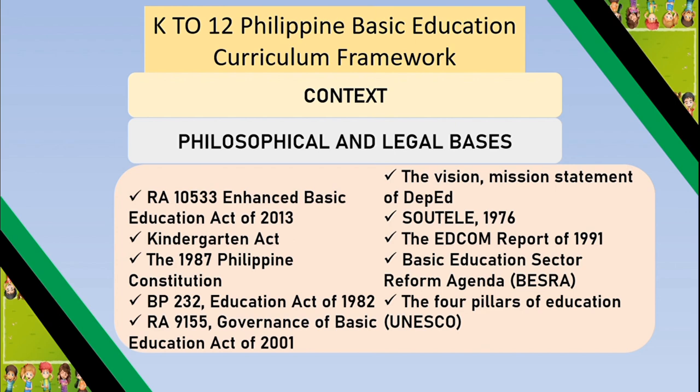RA 9155, or the Governance of Basic Education Act of 2001, ensures that local communities are empowered to participate in decision-making processes related to education. Because we live in a democratic country, we have the right to speak. Through expressing our needs, the government is able to address them. Examples of this participation include PTA meetings, assemblies, workshops, and seminars.